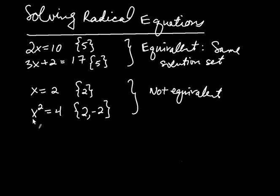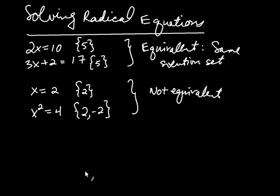The point is that when you take an equation and square both sides, you may end up getting numbers that make the new equation true but don't make the original equation true. You may end up with an equation that's not equivalent to the first. That's going to be important when we solve radical equations.